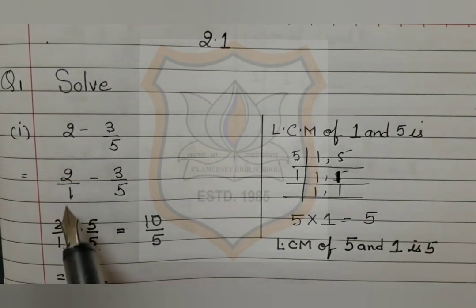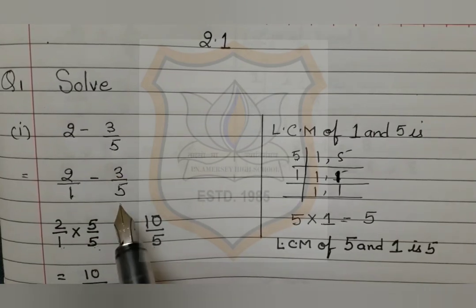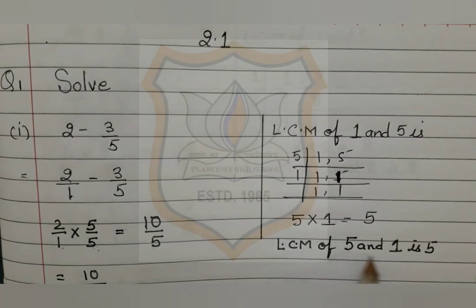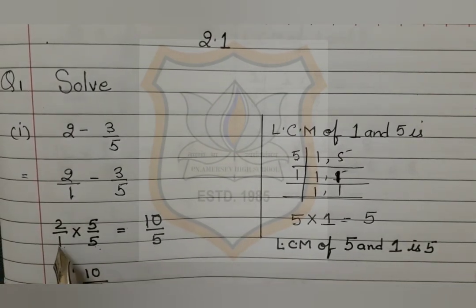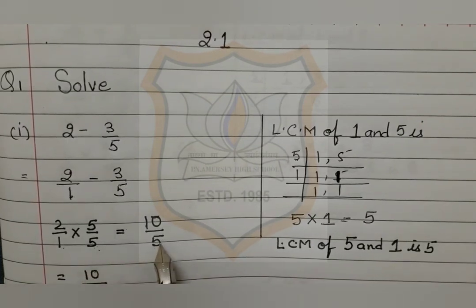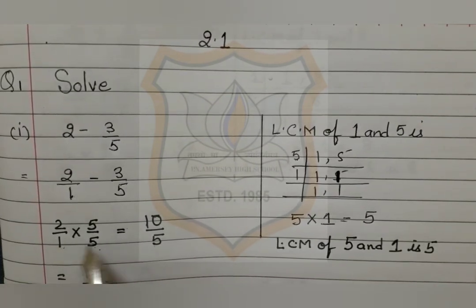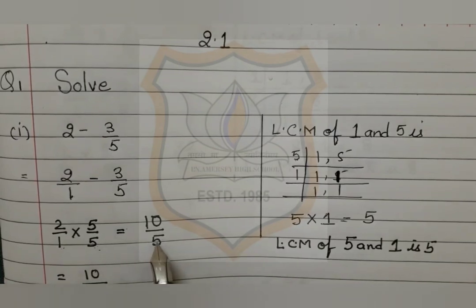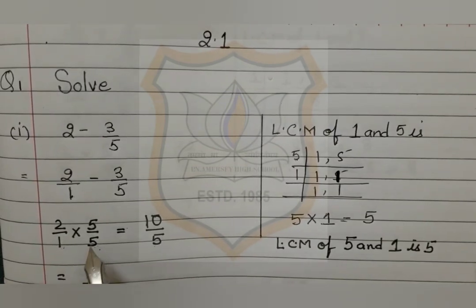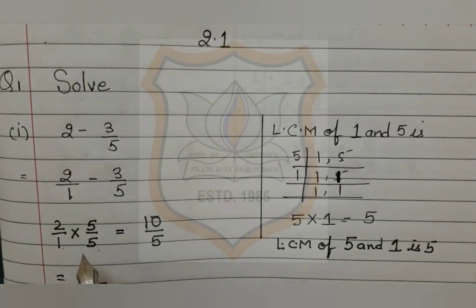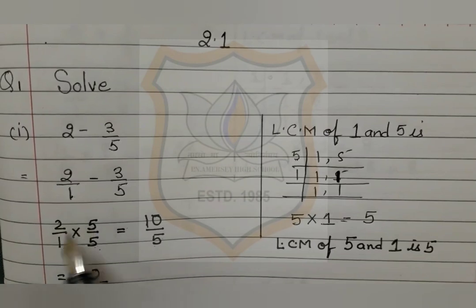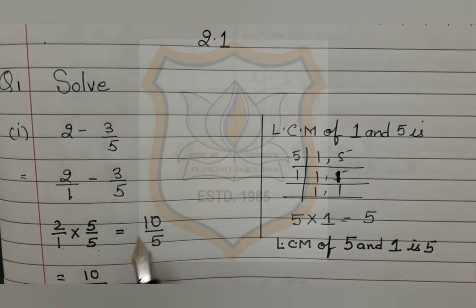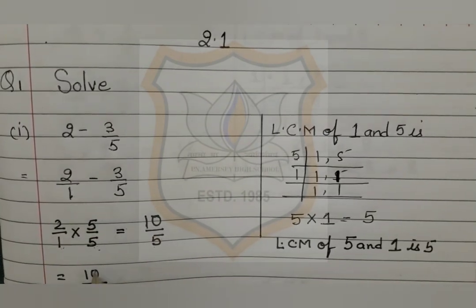Now the fraction becomes 2 upon 1 minus 3 upon 5. We will take the LCM of 1 and 5. LCM of 1 and 5 is 5. For 2 upon 1: 1 is multiplied by 5 to get 5. If you multiply the denominator by 5, you must also multiply the numerator by 5. So 2 into 5 gives 10. Our fraction becomes 10 upon 5.